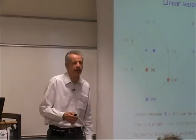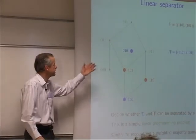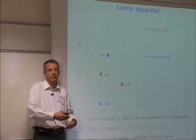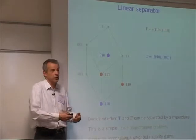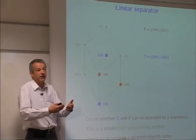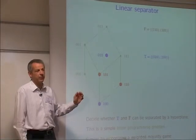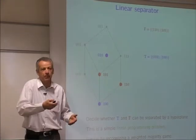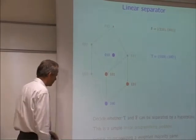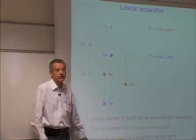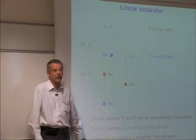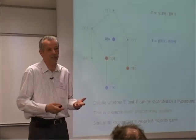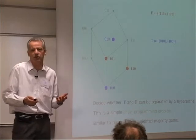You could also use linear separators — checking whether the blue points can be separated from the red points by a hyperplane, which is a linear separator. This can be done easily by linear programming. For those interested in game theory, this is perfectly equivalent to recognizing whether a game given by a set of winning and losing coalitions is a weighted majority game.